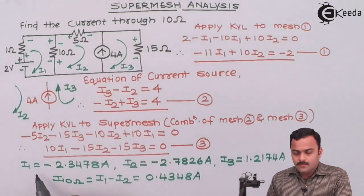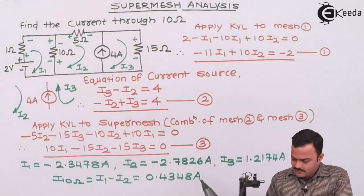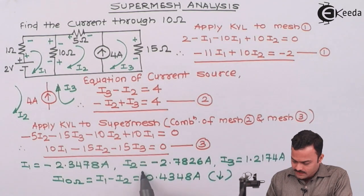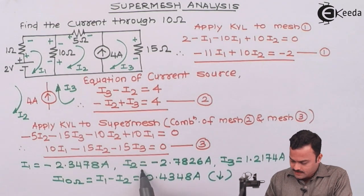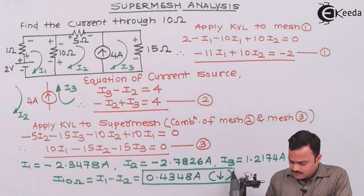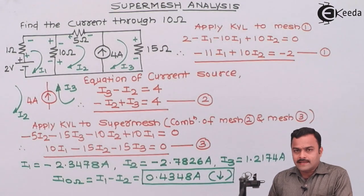Since I1 is more, hence the direction of I1 for this 10 ohm is downward. That will be the direction of resultant current. So we will have the complete answer as 0.4348 downward as the final current flowing through 10 ohm.